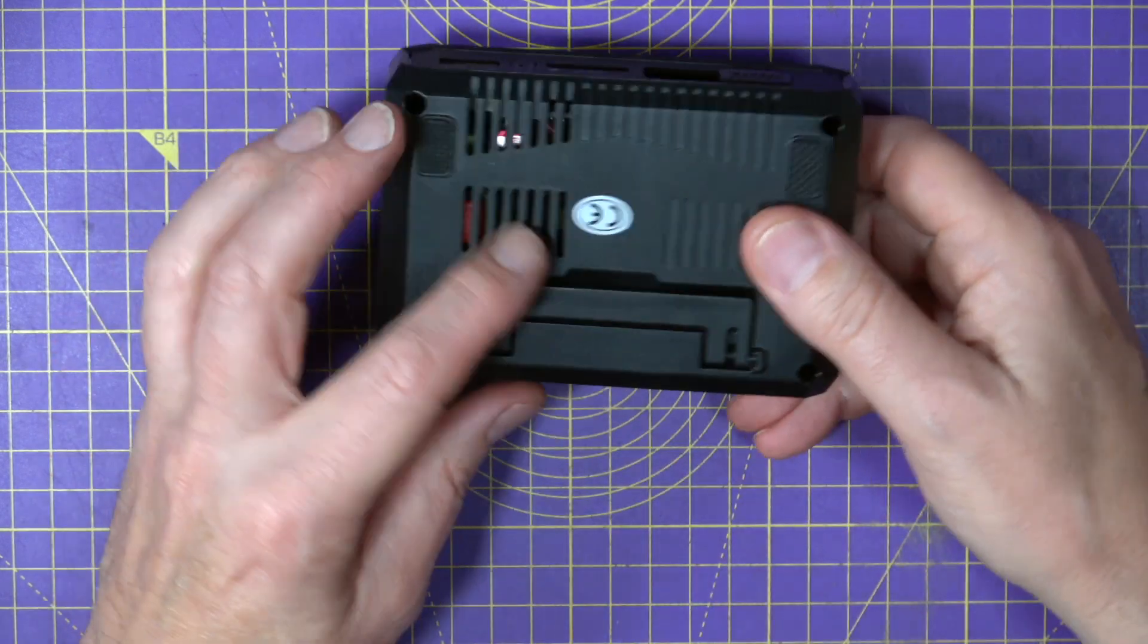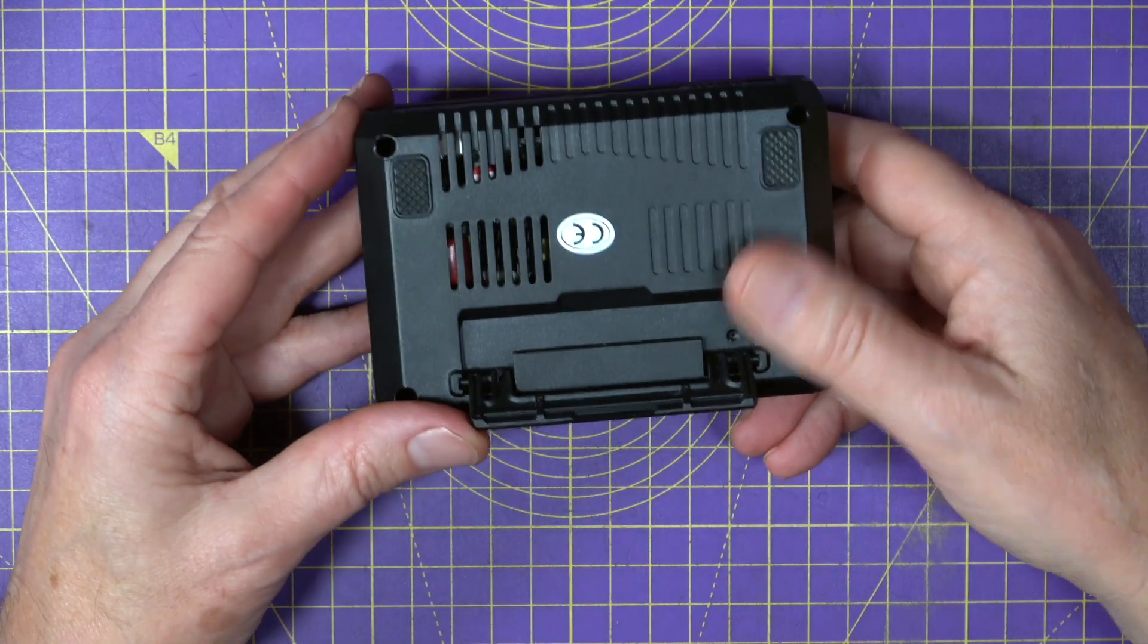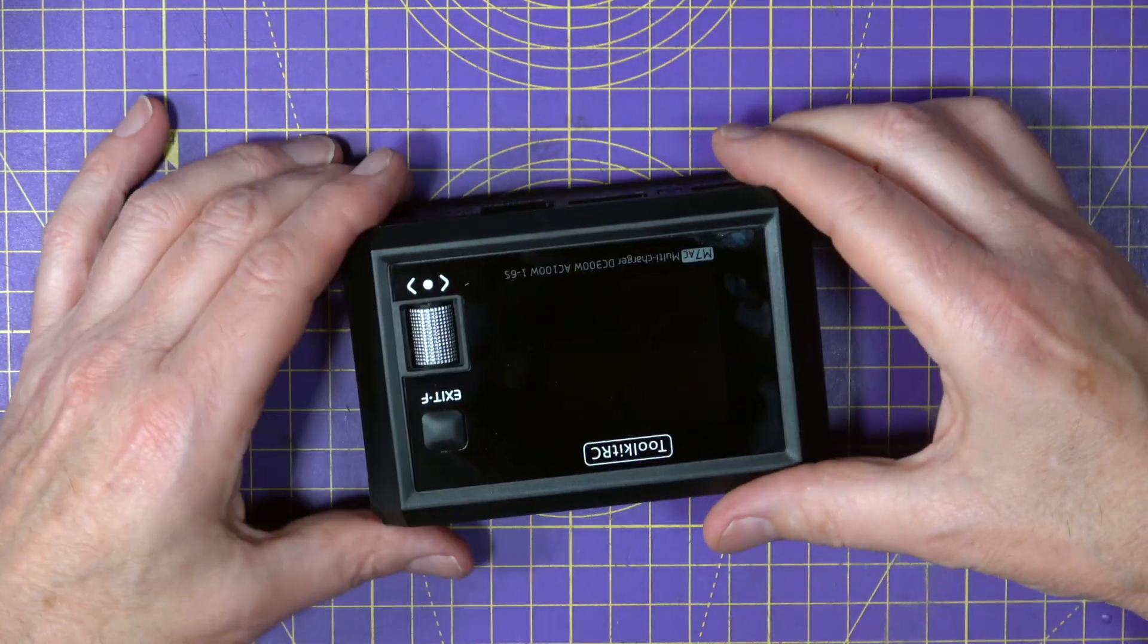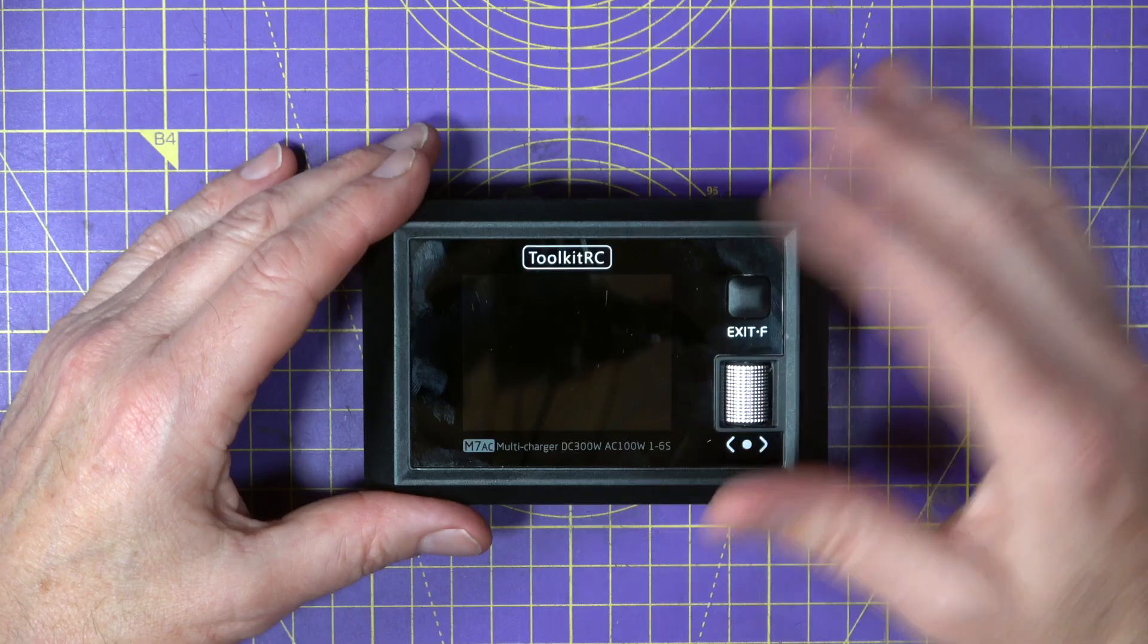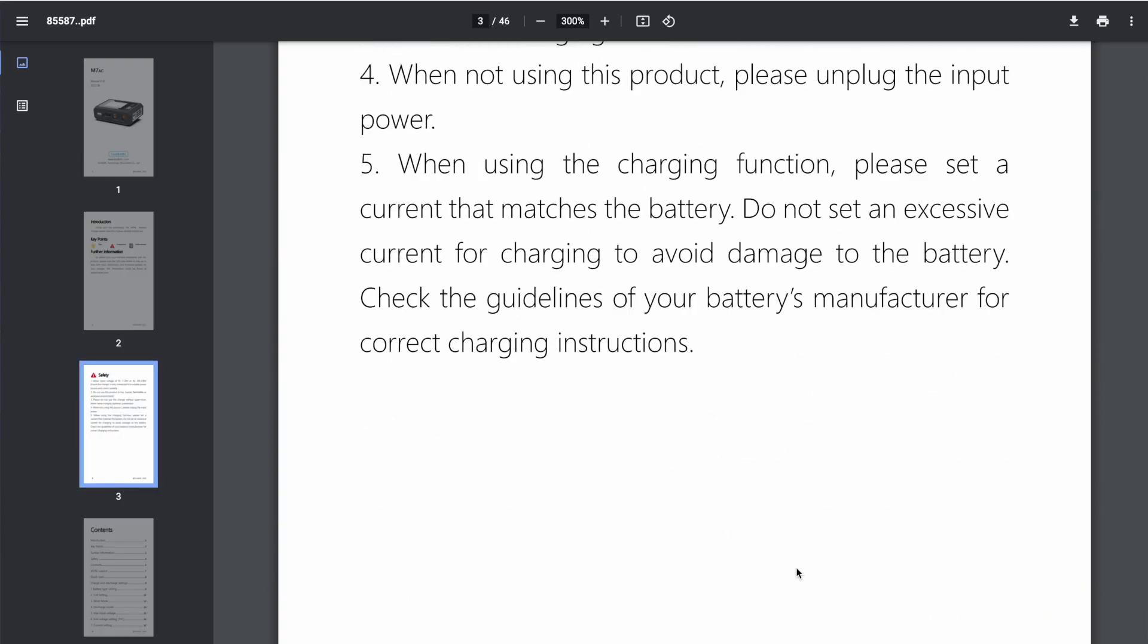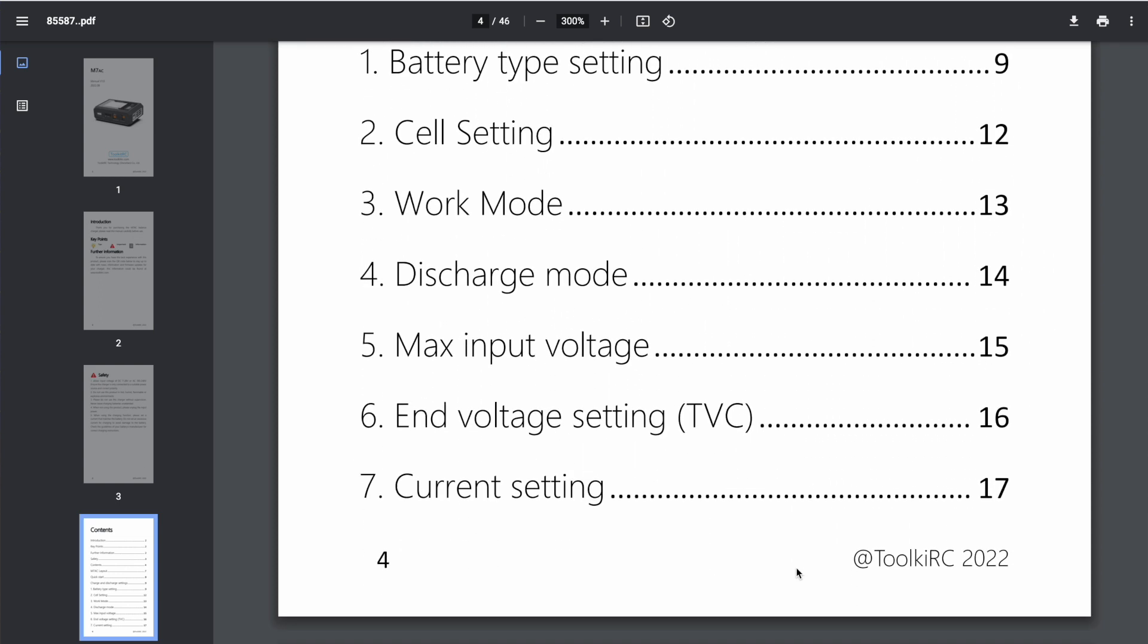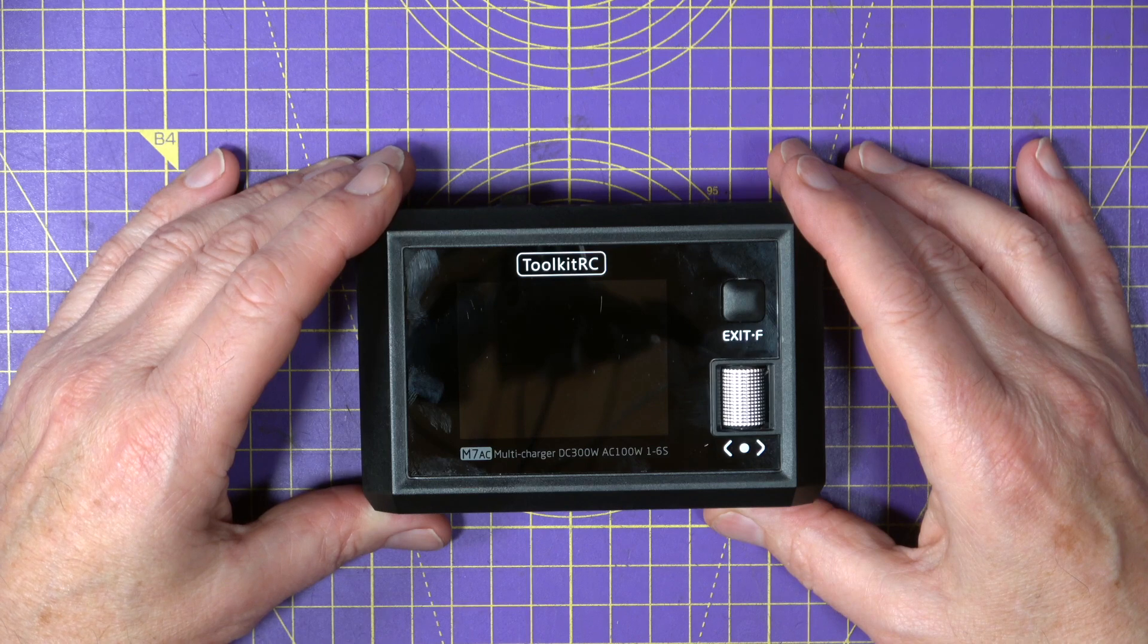Oh and there's this little flip up stand on the back here if you want to use it on the bench. You get a mains lead with this, a nice little screen protector and a USB cable in the box and there's a small manual but there's a full PDF version downloadable on their website. So let's see how easy this is to use.